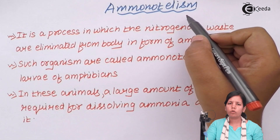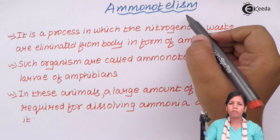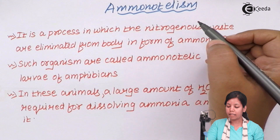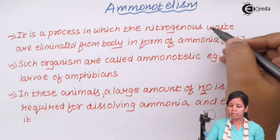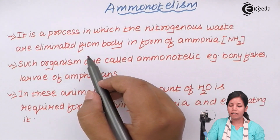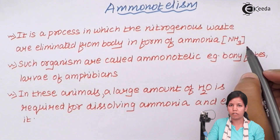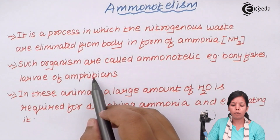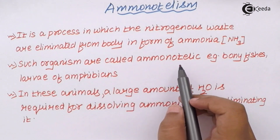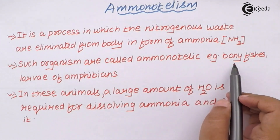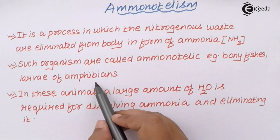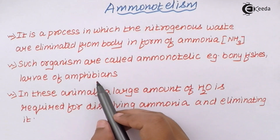Ammonotelism refers to the removal of ammonia from the body. The nitrogenous waste is eliminated in the form of ammonia or NH3. Organisms which eliminate ammonia are termed ammonotelic organisms, examples being bony fishes with hard solid bones, and larvae of amphibians such as salamanders.